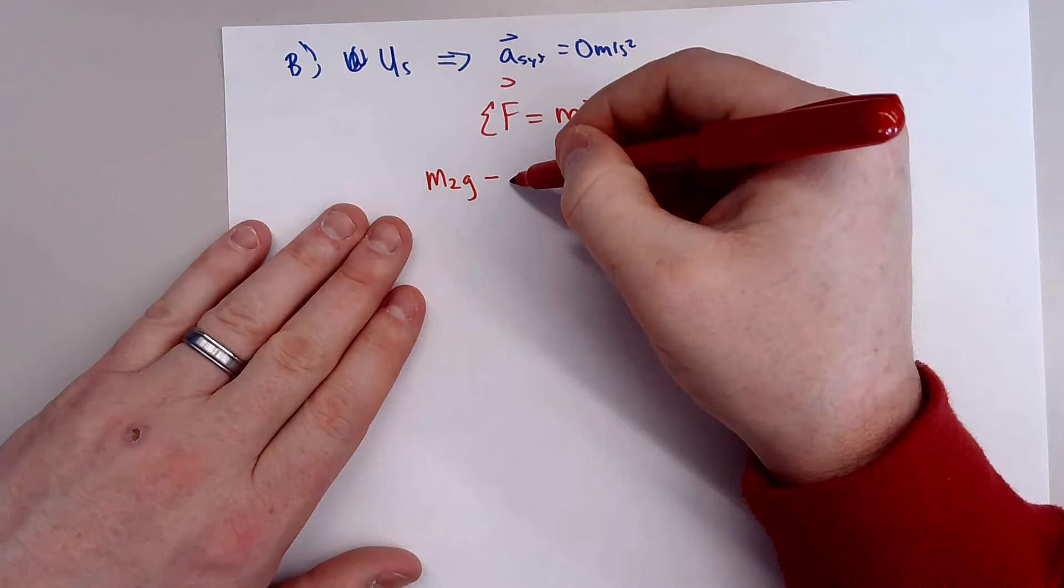And we're going to assume that to be, we'll assume down as positive. So we'll have M2 times gravity minus the force of friction on the M1 block equals MA. Well, we do not want this system to move. So pretty much we can set this M2g is equal to the force of friction on block one. Okay.